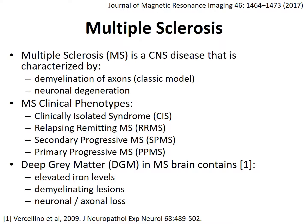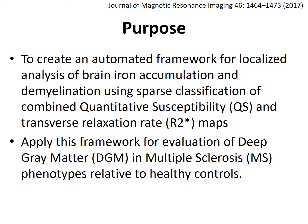This was revealed by a study by Vilsenio in 2009 and by other more recent studies. The purpose of the study was to create an automated framework for localized analysis of brain iron accumulation and demyelination using sparse classification of combined quantitative susceptibility and transverse relaxation rate R2-star maps, and to apply this framework for evaluation of deep brain matter in multiple sclerosis phenotypes relative to healthy controls.